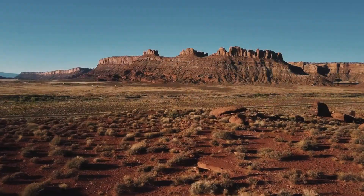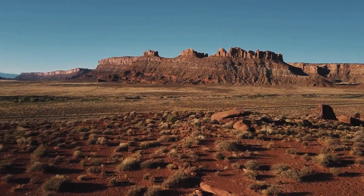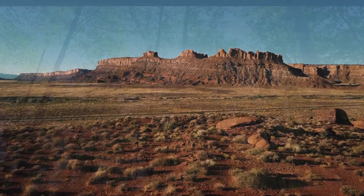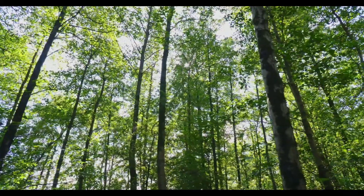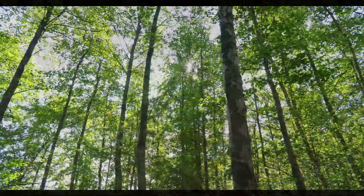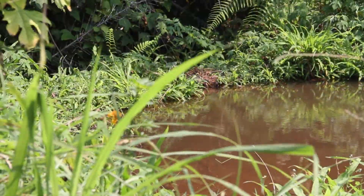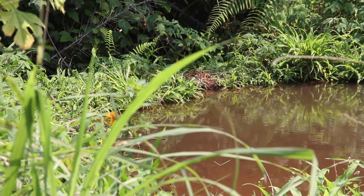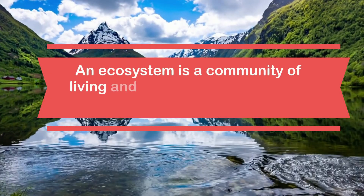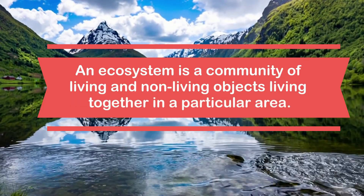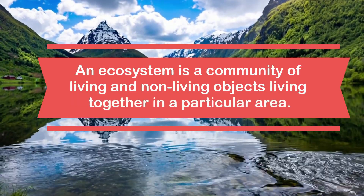This desert is an ecosystem. This forest is an ecosystem. This pond can be considered an ecosystem. And even this rotting log can be an ecosystem. An ecosystem is a community of living and non-living objects living together in a particular area.